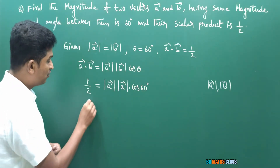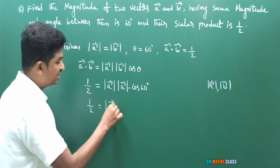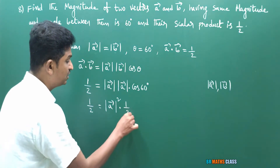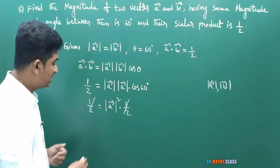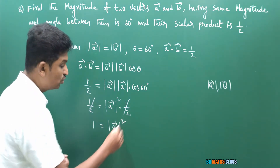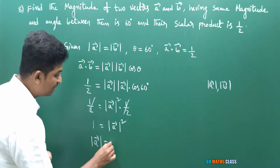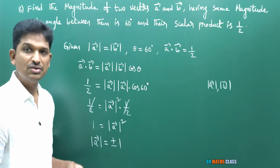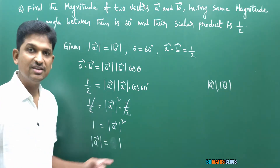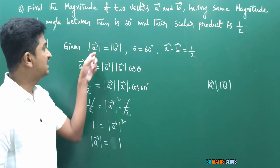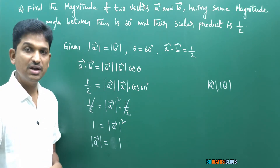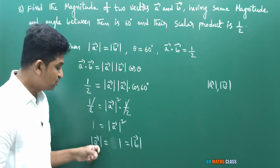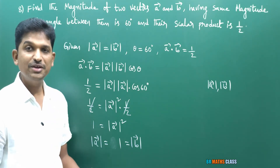From |A̅|² = 1, magnitude of A̅ is plus or minus 1. But magnitude means length of a vector, which is always positive. So |A̅| = 1. Since the question states |A̅| = |B̅|, magnitude of B̅ is also 1.